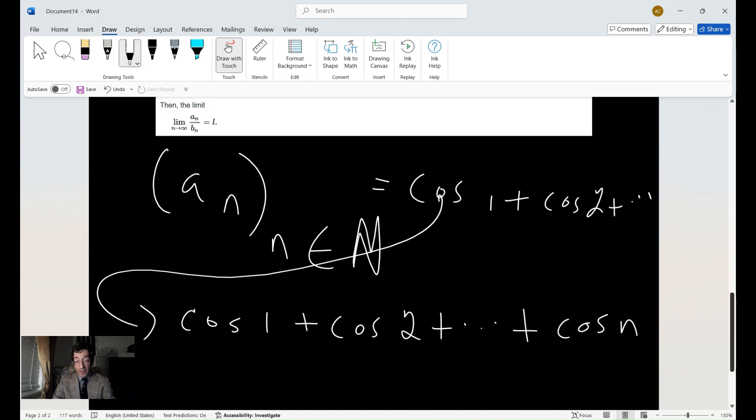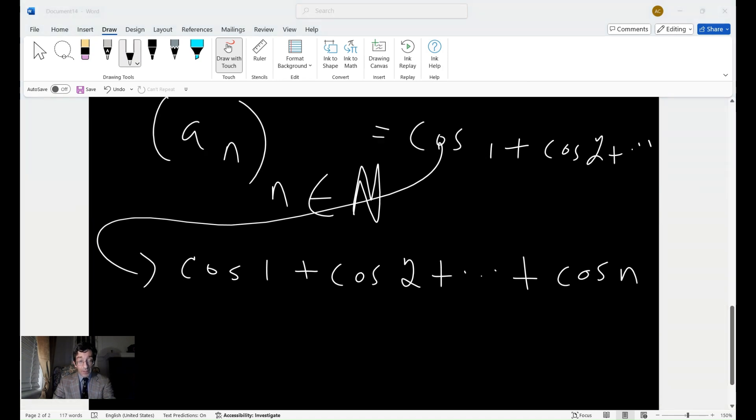And our second sequence is going to be, we can call it b sub n. And of course, n has to be an element of the natural numbers equals n squared.